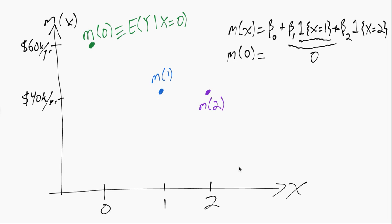Similarly, when x is 0, this indicator that x equals 2 will evaluate to 0. So then regardless of what beta 2 is, we'll get another 0. The only non-zero term that we'll have left is beta 0.